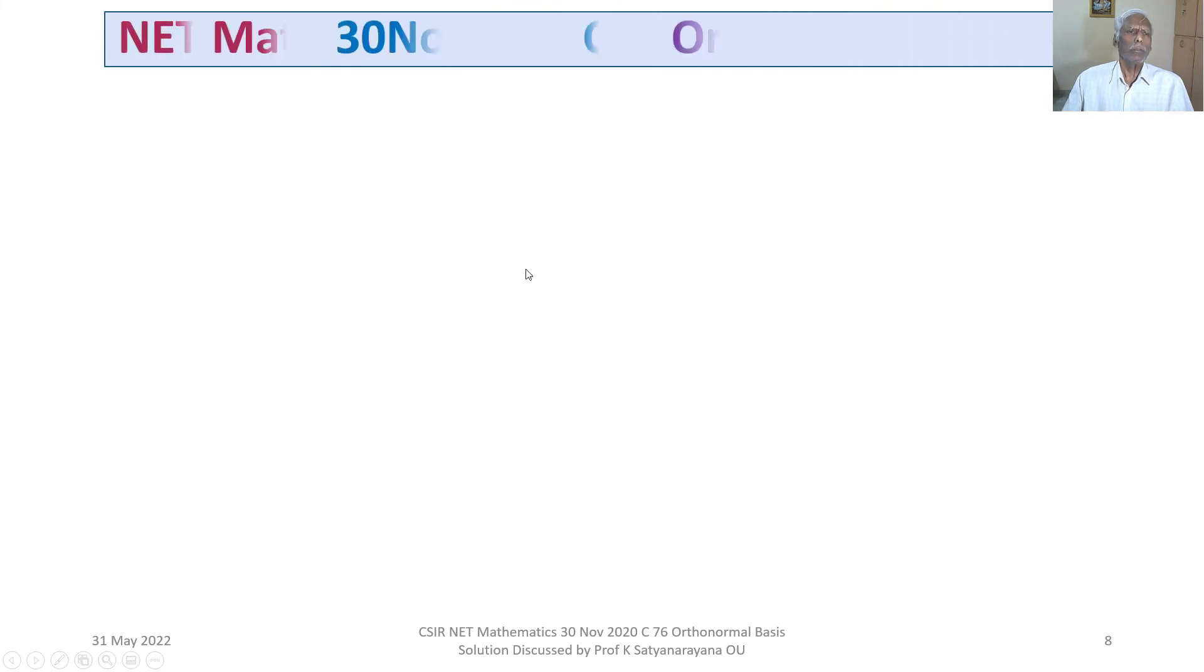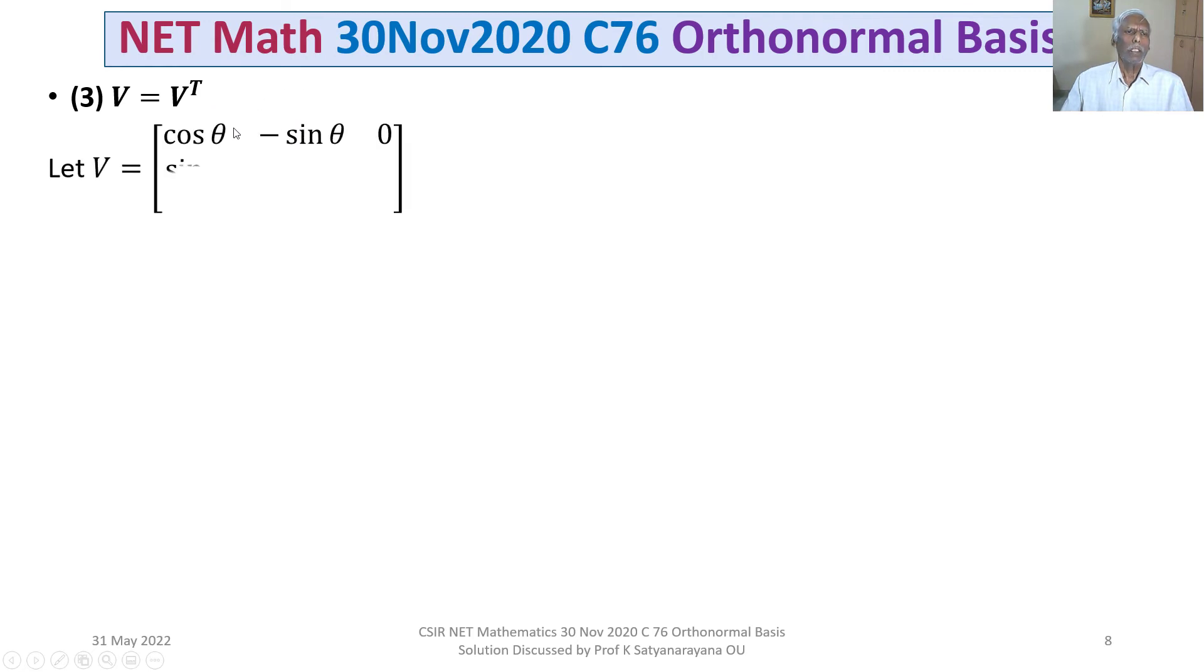Now, let us get into the third option. V equals Vᵀ. Let us consider a counterexample. Let V be the 3 by 3 matrix whose first column is cos θ, -sin θ, 0, second column sin θ, cos θ, 0, third column 0, 0, 1. It is a rotational matrix.